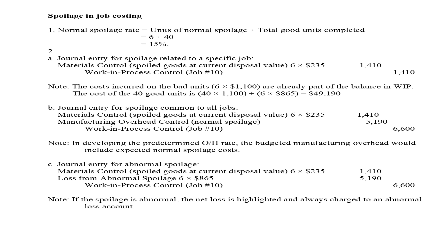For the journal entry for spoilage related to a specific job: on the debit side, put materials control or cash control for the spoiled goods at the current disposal value — 6 units at $235 per unit. Then credit work in process control for the job by the same disposal value amount.